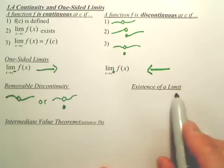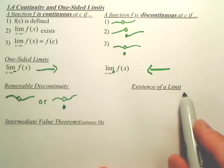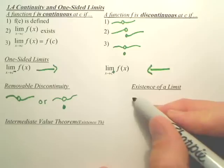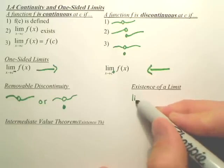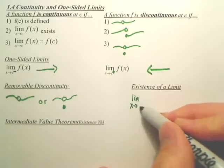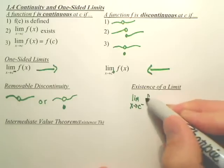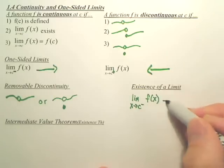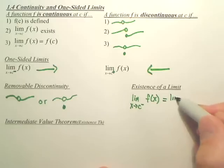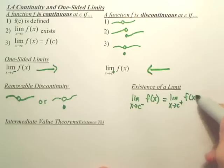Next, the existence of a limit. How do we know a limit exists? Well, a limit exists if you take the limit from the negative side of f of x should equal the limit as x approaches C from the positive side of f of x.